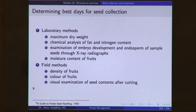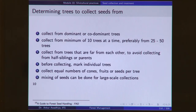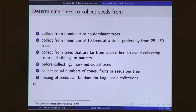You can also look at the moisture content of the fruits. Field methods include density of fruits, color of fruits, and visual examination of seed contents after cutting. We also determine the best trees to collect seeds from — generally dominant or co-dominant trees. Collect from a minimum of 10 to 50 trees, from trees that are far from each other to avoid collecting from half-siblings or parents. Before collecting, mark individual trees and collect equal numbers of cones, fruits, or seeds per tree.